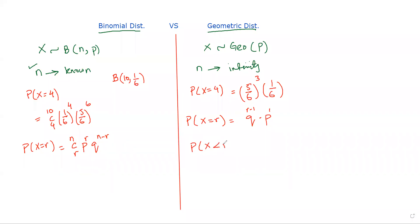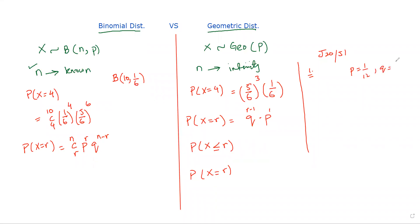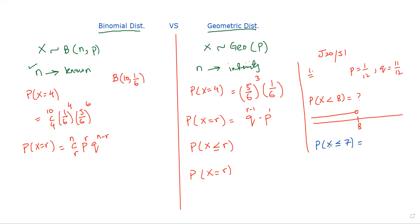A problem arises in the geometric distribution when finding P(X < r) or P(X > r). For example, from the June 2020 paper, where the probability of success was 1/12 and failure was 11/12, we needed to find P(X < 8). Using the number line, P(X < 8) is the same as P(X ≤ 7).